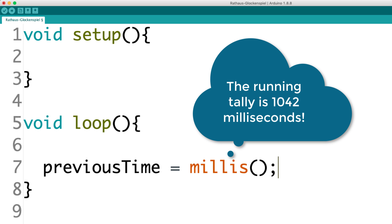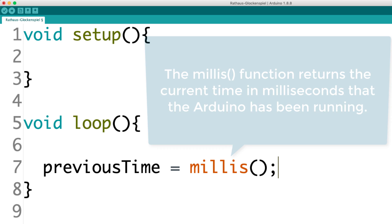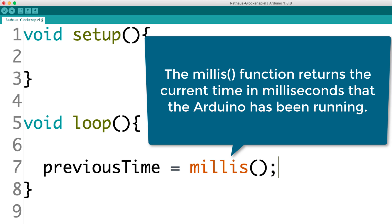If a function performs a calculation for you and it gives you some information back, it's said to return a value. You might hear something like, what value does that function return? So when I say that the millis function returns a value, what I'm saying is that it gives us the current time in milliseconds that the Arduino has been running.